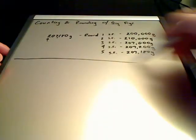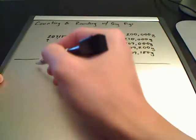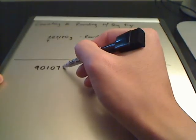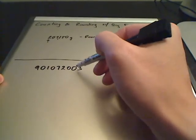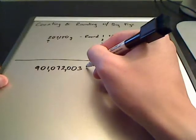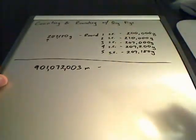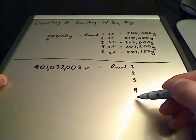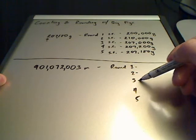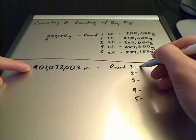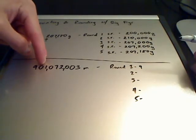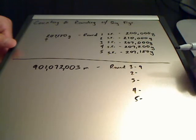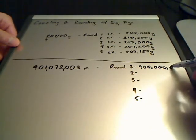Let's do another example: 901,072,003 meters. We'll round to 1, 2, 3, 4, and 5 sig figs. Starting with 1 sig fig: the 9 is your first significant digit, 0 is your rounding digit — keeps the 9 as is. We use zeros as placeholders because this 9 is in the hundred-millions column, giving 900,000,000. For 2 sig figs, the 9 and 0 are significant, so 1 becomes the rounding digit. That 1 keeps the 0 as 0. Writing it without a decimal gives only 1 sig fig, and adding a decimal gives 9 sig figs — so the only way to express 2 sig figs is scientific notation: 9.0 × 10⁸ meters.